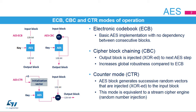The third mode of operation is the counter mode, or CTR. In this mode, the AES engine is used as a random stream generator. The resulting random stream is mixed with the input message with an exclusive OR operation. As for CBC, CTR requires an initialization vector different for each encryption session.